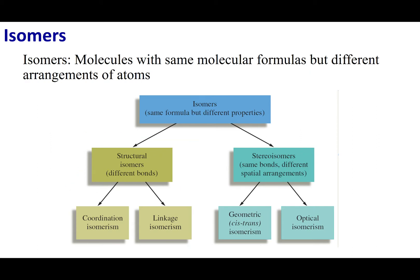The other type of isomer is stereoisomers. In stereoisomers, the connectivity is the same — meaning I have the same type and number of bonds. However, what is different is the spatial arrangement of the atoms. In this chapter we're going to talk about geometric isomers and optical isomers. Your book says geometric isomers are cis-trans isomers, but a better description is these are isomers with different angles.